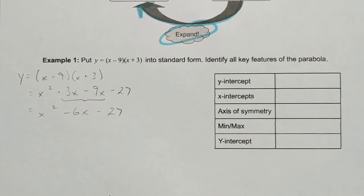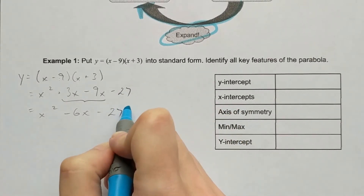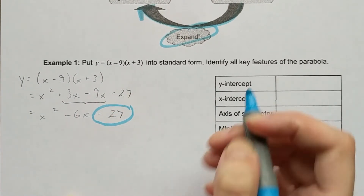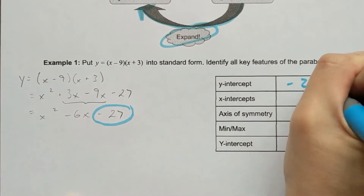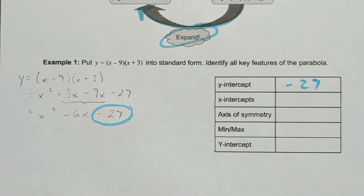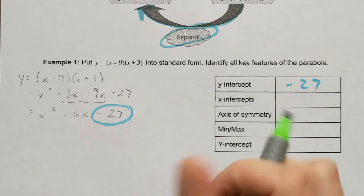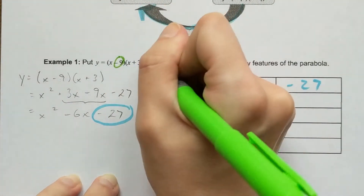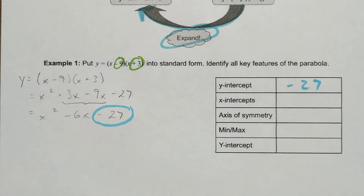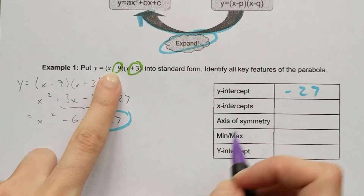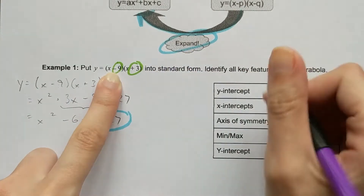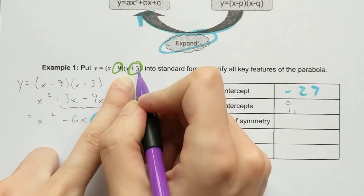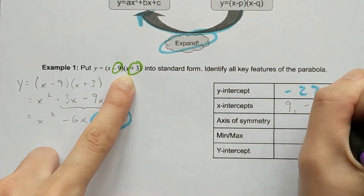Now I can start pulling some information. The last number in our standard form gives us the y-intercept, so our y-intercept is -27. We also recall that factored form gives you your x-intercepts, and the x-intercepts have the opposite sign of what's in the brackets. So my x-intercepts are positive 9 and negative 3.